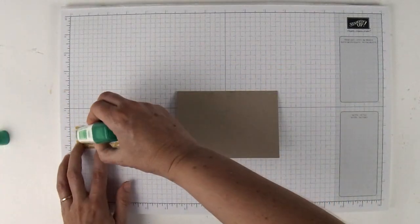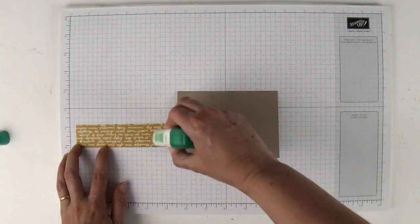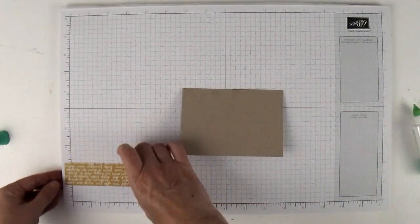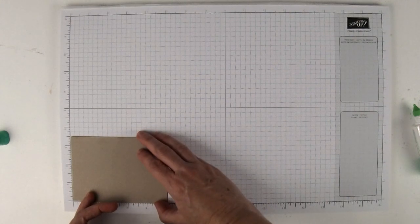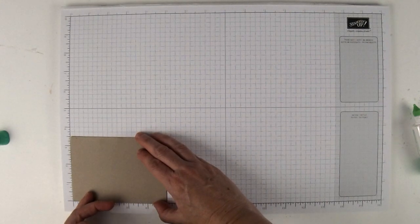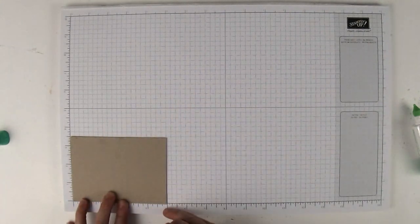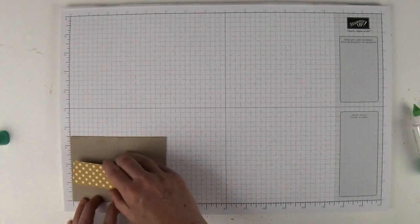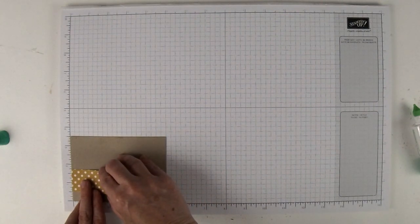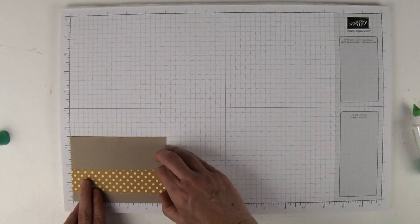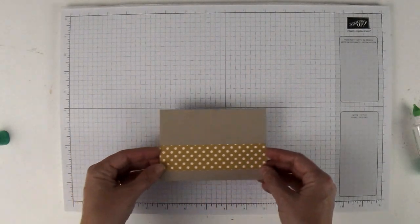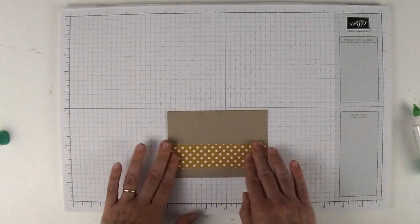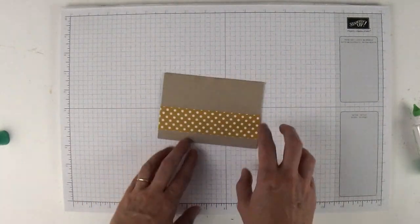I'm just going to put a little bit of Tombow on the back here. When I measured it, it looked best about half an inch from the bottom. I'm just going to use my grid paper here to get it about half an inch from the bottom and adhere that down.